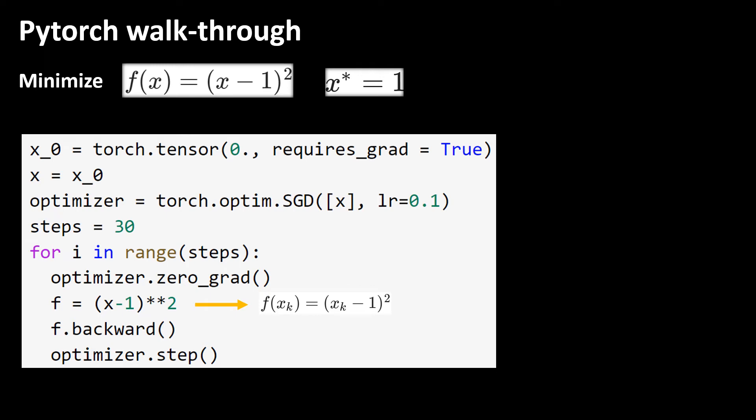Here in this line we are evaluating our function at the current iterate which is k. Once we know the function value we can take its derivative. f.backward means take the derivative of f. But why backward means take the derivative or the gradient?